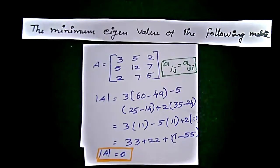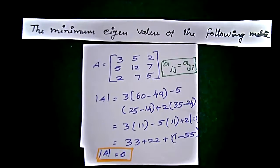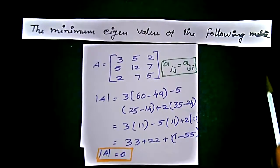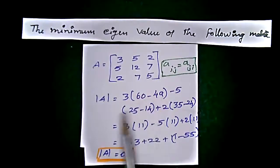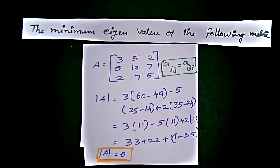Hi, we have the question: find the minimum eigenvalue of the following matrix. The matrix is 3, 5, 2 in the first row; 5, 12, 7 in the second row; and 2, 7, 5 in the third row.